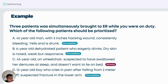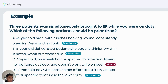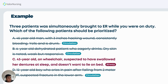Letter C seems the most relaxed among the patients, but there are very important cues: the patient is on a wheelchair, suspected to have swallowed her dentures during sleep, and doesn't want to lie on the bed — probably because she has difficulty breathing when lying down. So the patient may be having difficulty breathing, and the key cue is not wanting to lie down. There is a problem with airway. The best answer is letter C. This is actually a level four PNLE question in terms of difficulty.